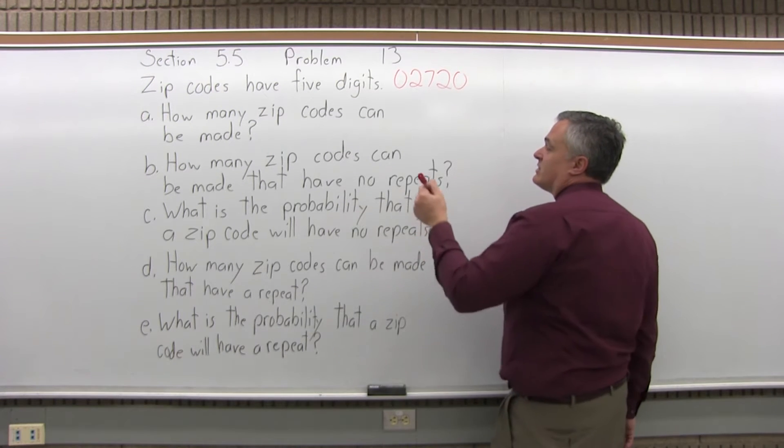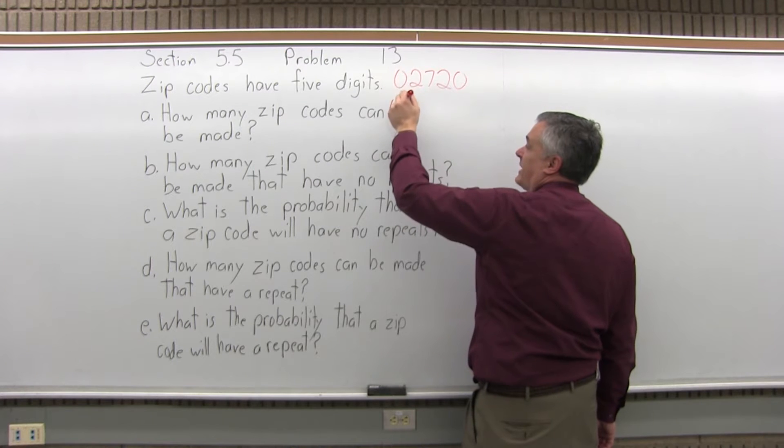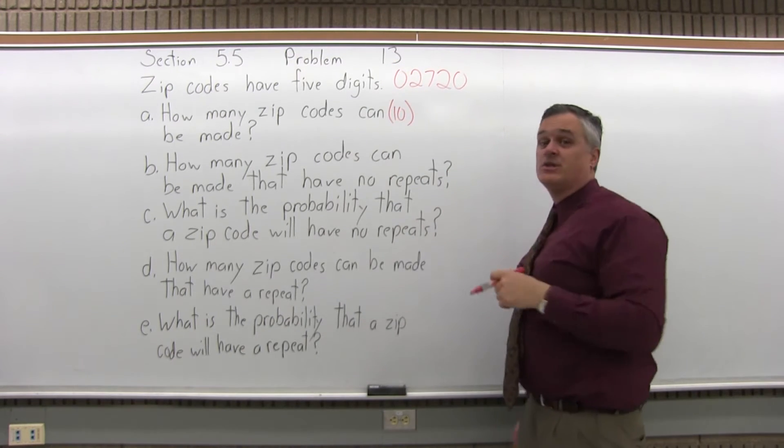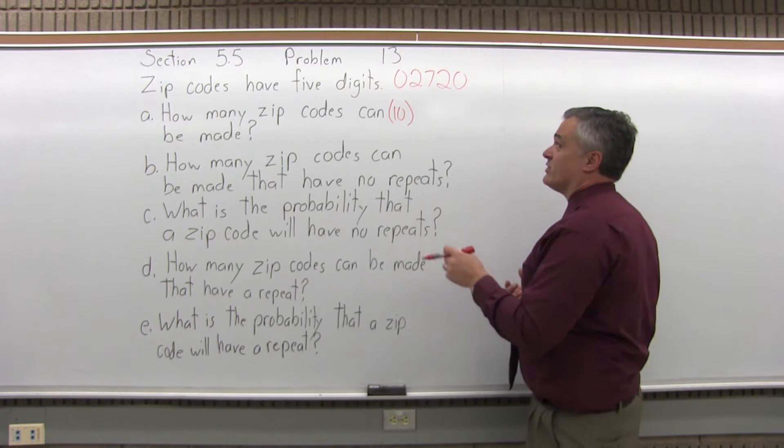Well, this is a multiplication principle question. So you have a five-step process. Step one is choose the first digit. There are ten choices. Your ten choices is 0 through 9: 0, 1, 2, 3, 4, 5, 6, 7, 8, 9. Those are the ten choices.